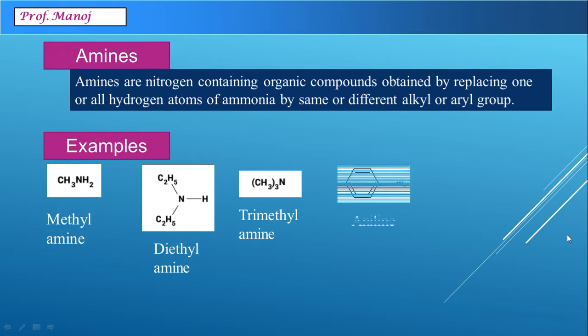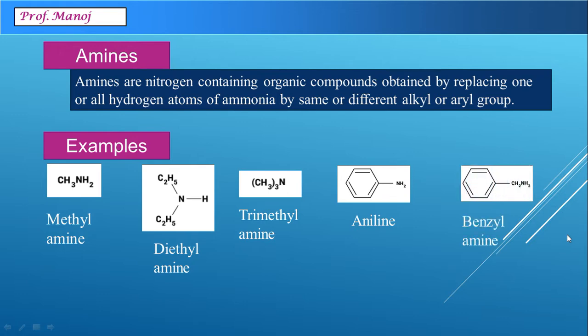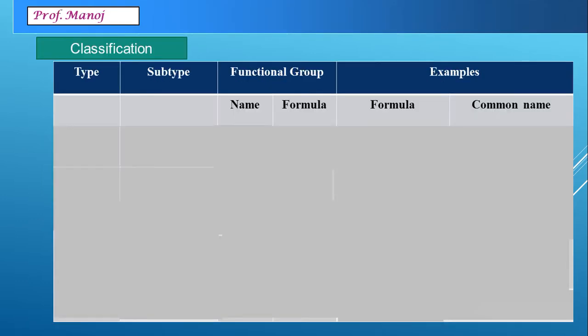We can have amines containing aryl groups also. Here we can see a structure of aniline. Another case is where the aromatic ring is not directly connected to the nitrogen atom — this example is benzyl amine. Whatever structures we see right now, we must remember them well for methods of preparation as well as reactions.